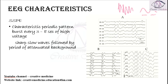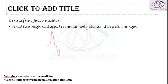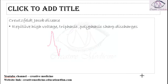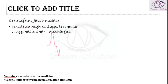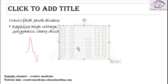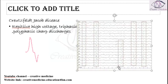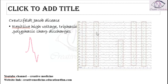This is the EEG of subacute sclerosing panencephalitis. Now in Creutzfeldt-Jakob disease, you will see presence of repetitive high voltage phasic polyphasic sharp discharges. This is a triphasic discharge: it goes up, then down — one, two, three phases. Triphasic discharge will be seen; high voltage triphasic or polyphasic discharges are seen.